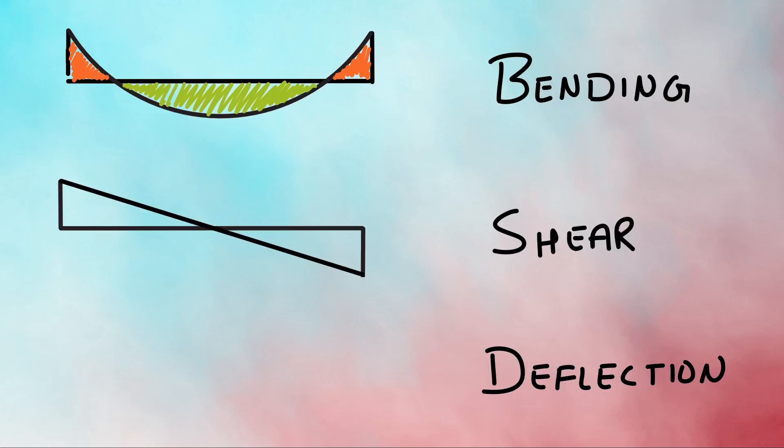There are three types of failures: failure in bending, failure in shear, and failure in deflection.